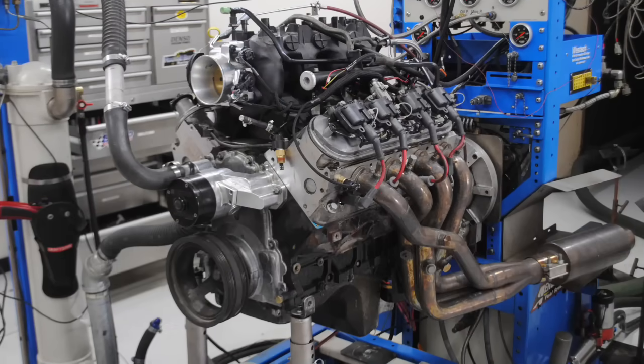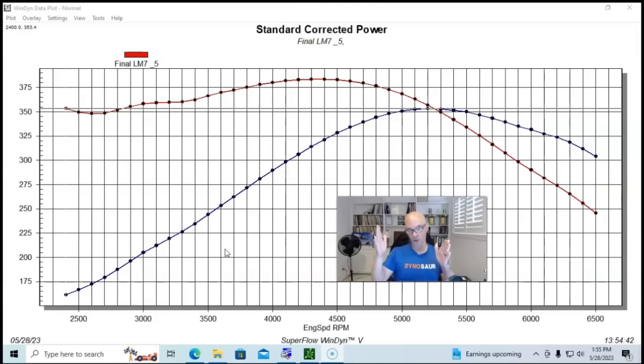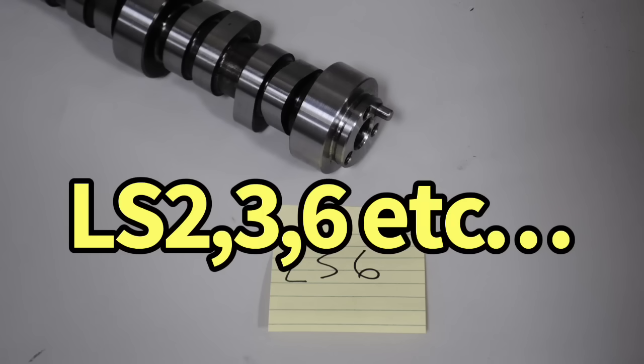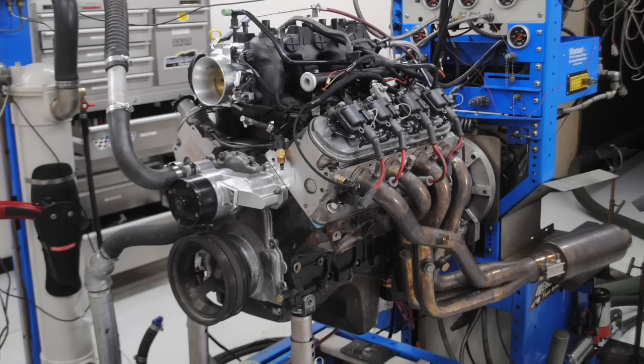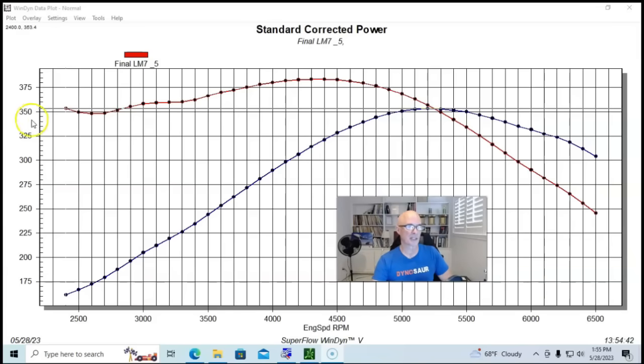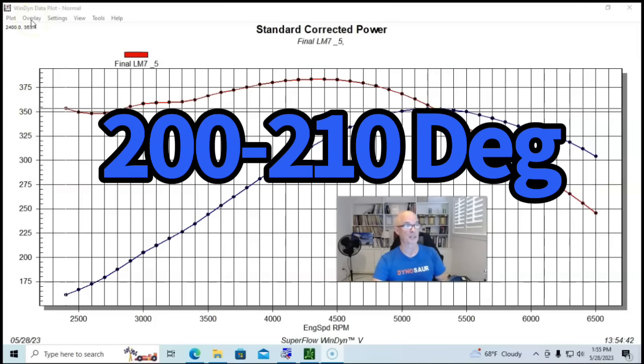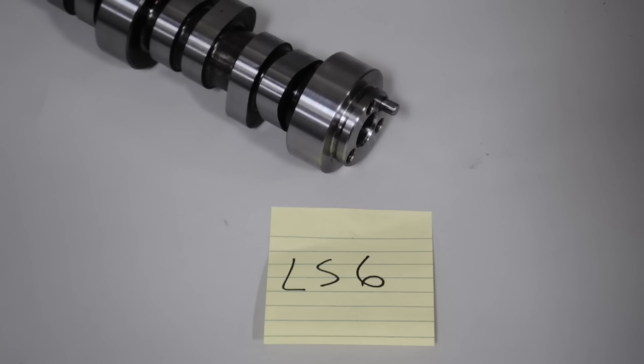Now let's step up in our camshaft matrix to cams ranging from 200 degrees at 50 on the intake to 210 degrees. A lot of other factory cams fit into this range. We're going to start off with our comparison, a 5.3 with our LM7 camshaft, our 191 degree duration camshaft. If we take a look at the other cams that fit into this range between 200 and 210 degrees of intake duration, a good example would be the factory LS6 camshaft.